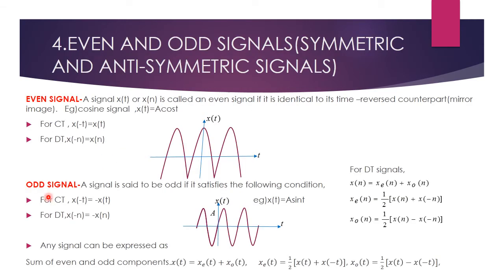Next, we are going to see even and odd signals. The other names are symmetric and anti-symmetric signals. For an even signal, consider placing a mirror on the y-axis — the right side image reflects to the left side. The signal x(t) or x(n) is called an even signal if it is identical to its time-reversed counterpart. The condition is x(−t) = x(t) for continuous time, and x(−n) = x(n) for discrete time. It is also called a symmetric signal because it is symmetric along the y-axis.